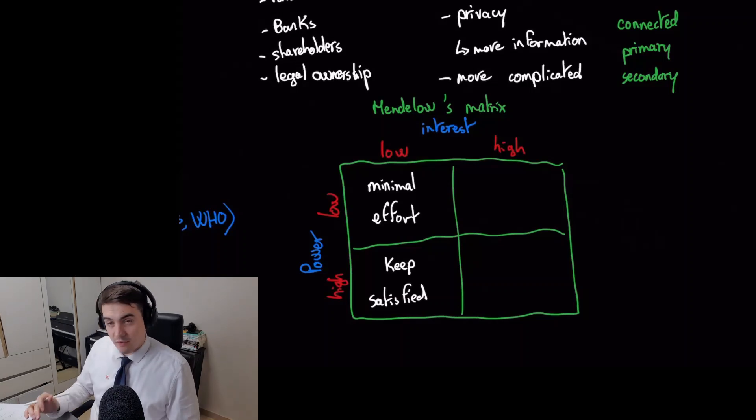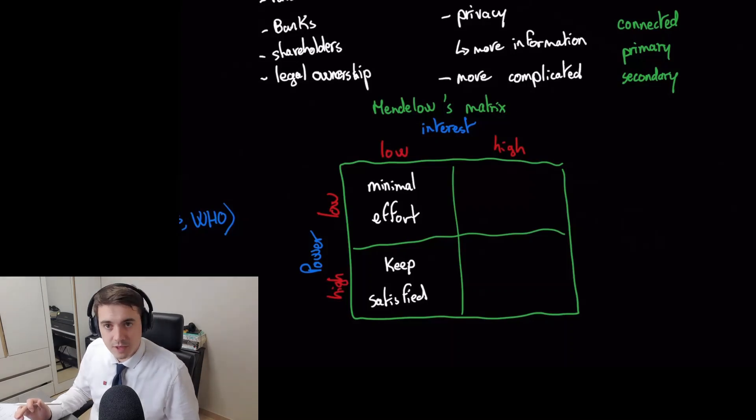Now what about very high interest but very low power? For example, a super enthusiastic customer like a blogger who loves your bakery, but he doesn't have many followers on his social media, so he doesn't have a lot of power. But he's a super fan, so high interest but low power: keep informed.